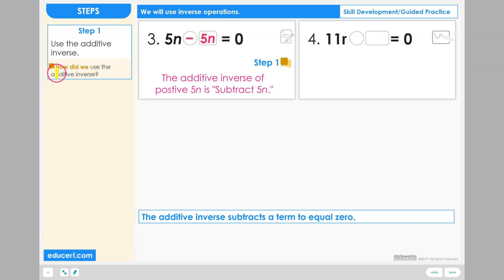How did we use the additive inverse for this variable term? Whether it was a numeric term or a variable term, in both situations, we will subtract away the exact value when applying the additive inverse.